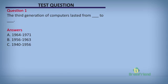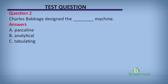Question one: The third generation of computers lasted from — to —. A: 1964 to 1971. B: 1956 to 1963. C: 1940 to 1956. The correct answer is A — 1964 to 1971. Question two: Charles Babbage designed the — machine. A: Pascaline. B: Analytical. C: Tabulating. The correct answer is B — the analytical machine.